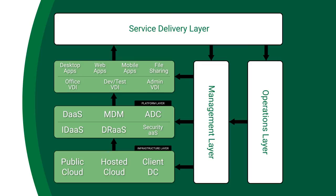Lastly, on top of that we now place the components of the architecture that are directly usable by our users. Those include the actual desktop applications as well as multiple instantiations of virtual desktops through a VDI implementation. It also includes mobile applications and file sharing capabilities.